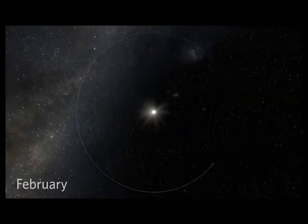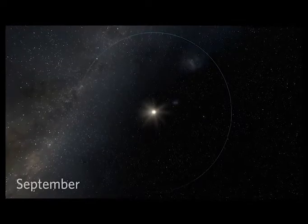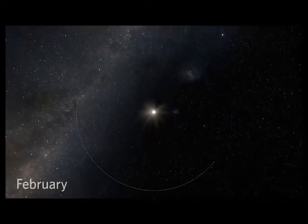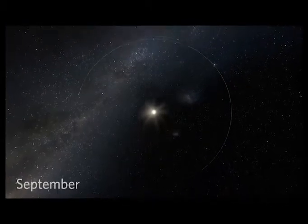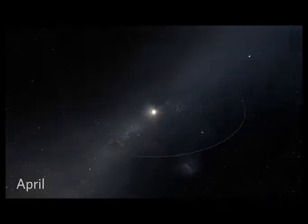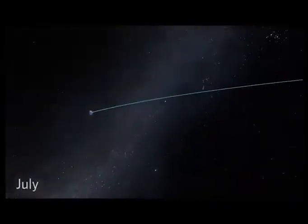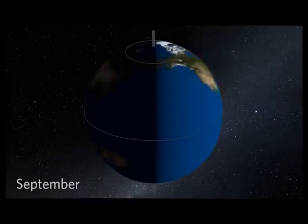Light is the fastest thing we know. It's so fast that we measure enormous distances by how long it takes for light to travel them. In one year, light travels about 6 trillion miles, a distance we call one light year. To give you an idea of just how far it is, the moon, which took the Apollo astronauts four days to reach, is only one light second from Earth.